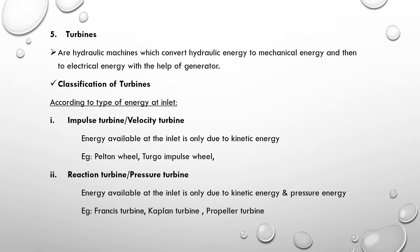Next, classification of turbines. Turbines are classified based on energy at the inlet — two types: impulse turbine, also called velocity turbine, and reaction turbine, also called pressure turbine. For the impulse turbine, the energy available at the inlet is only due to kinetic energy. For the reaction turbine, the energy available at the inlet is due to both kinetic energy and pressure energy.